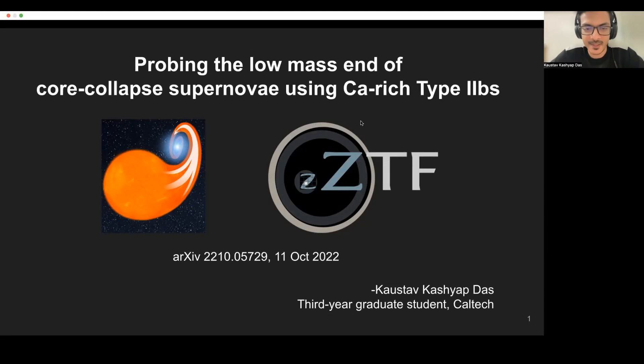Hi, I'm Kaustuv. I'm a third-year astronomy graduate student at Caltech. I'm currently working with Professor Mansi Kasliwal and the ZTF group. Today I'll be talking very briefly about the recent archive submission titled Probing the Low Mass End of Core Collapse Supernovae. We do this using a sample of nine calcium-rich Type IIb supernovae discovered and followed up as part of the ZTF programs.